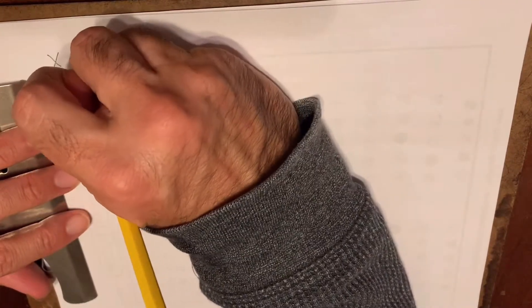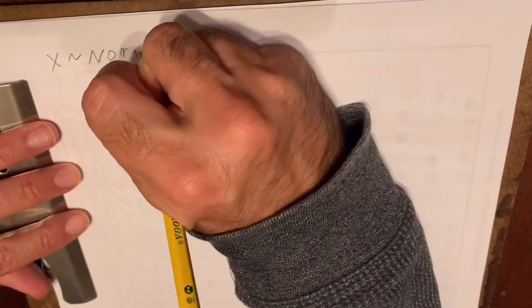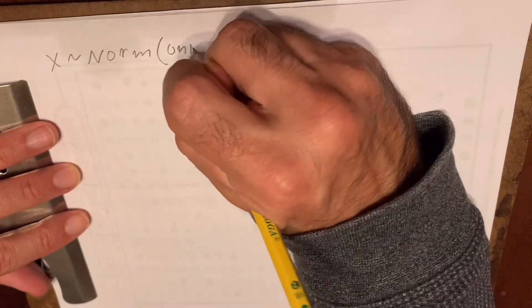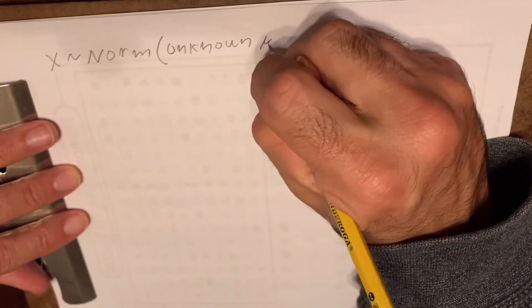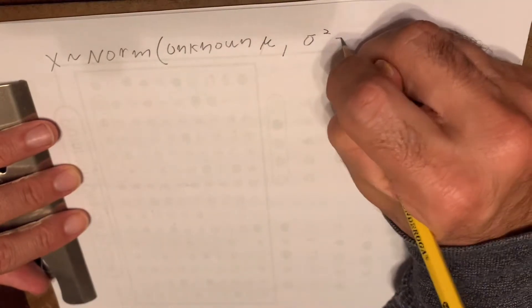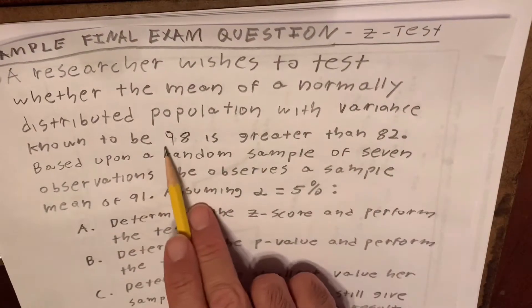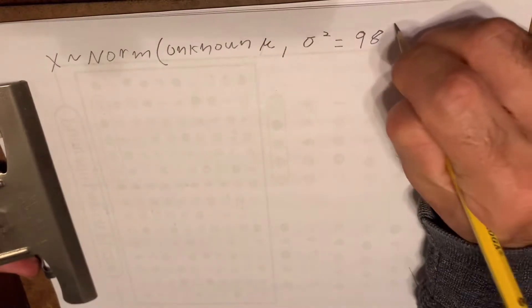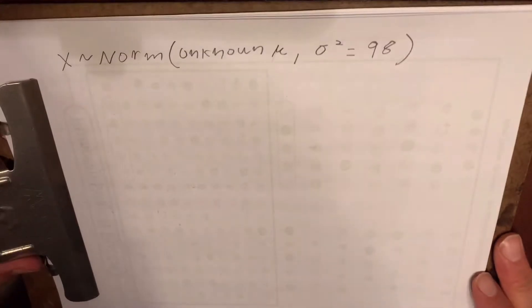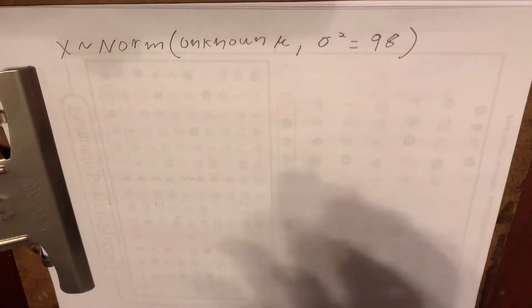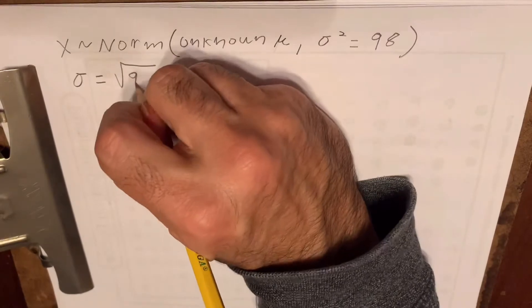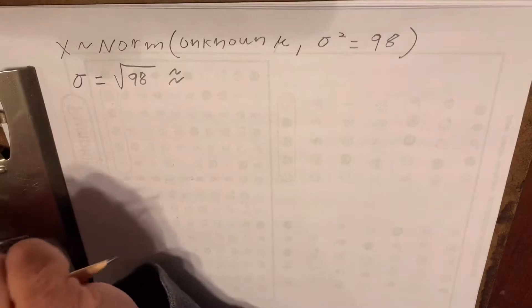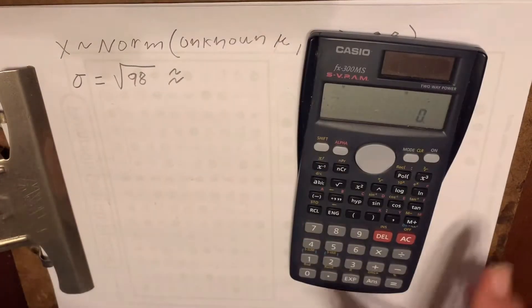The first thing we're going to do is let X be a normally distributed random variable with unknown mean and variance equal to 98. In most stats classes, it's easier to think in terms of standard deviation than variance, so let's get the standard deviation first by taking the square root of the variance. We're going to round it off to the nearest ten-thousandth so we have some precision in our calculation.